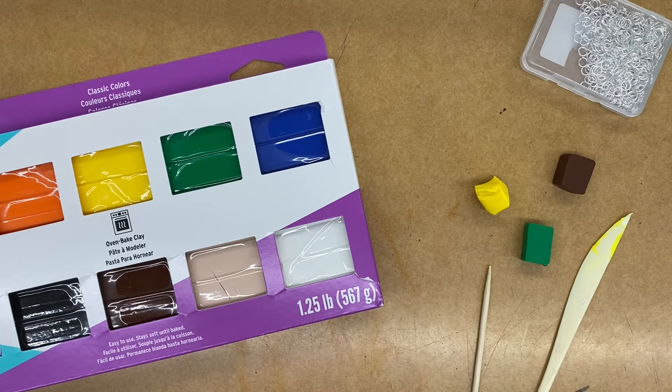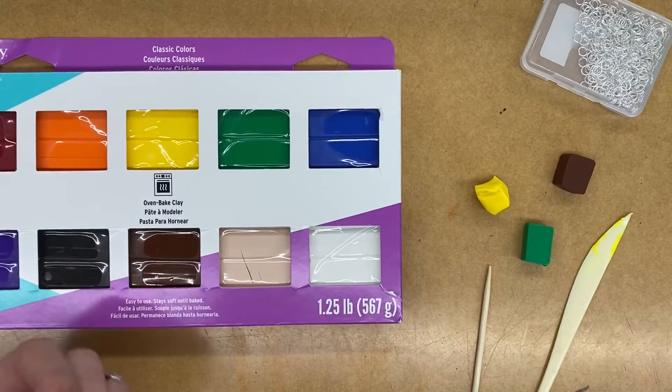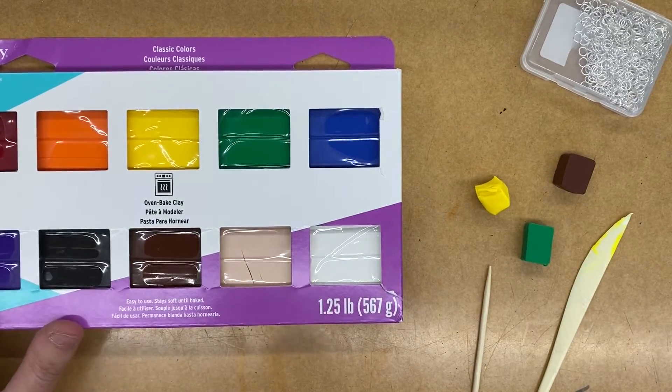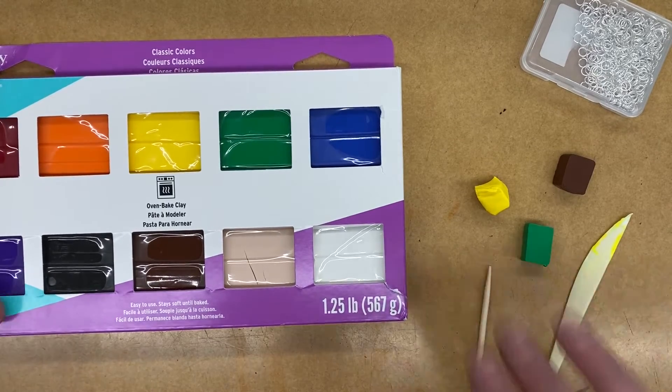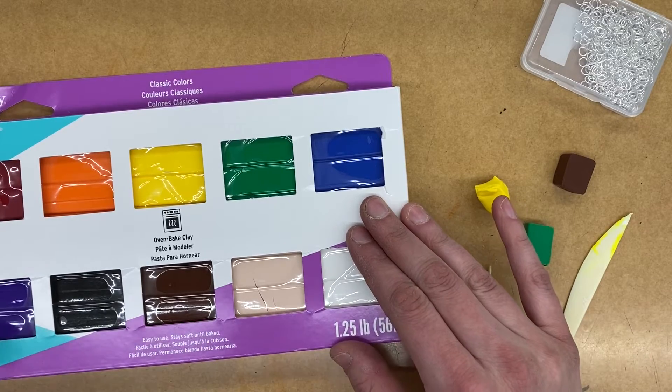So if you're not familiar with polymer clay, this is an example of some right here. Polymer clay is a soft, malleable clay that does not dry when it's exposed to air. You have to bake it in the oven in order for it to completely harden.